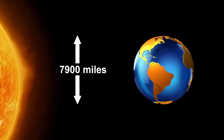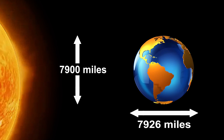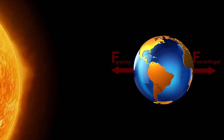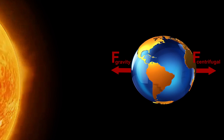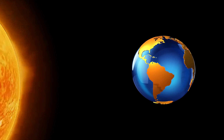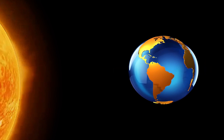But at the equator, the diameter is a little bigger — 7,926 miles — because gravity stretches it out a little. And the oceans also get stretched out. This is the tides.